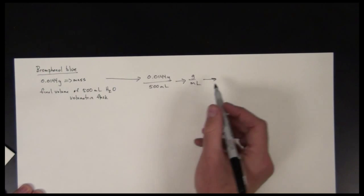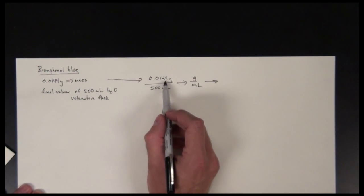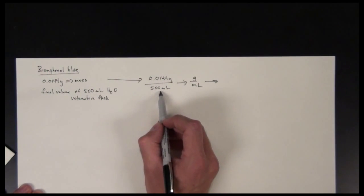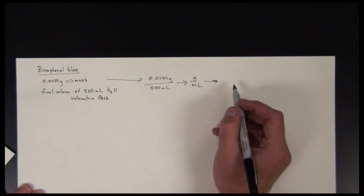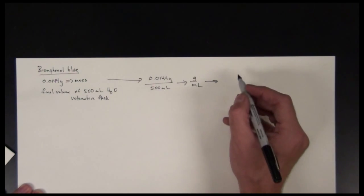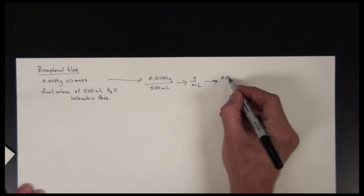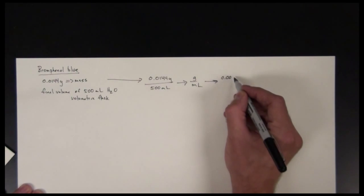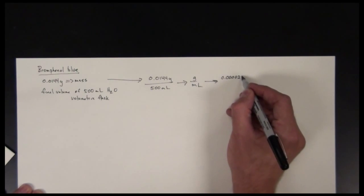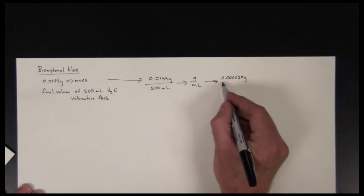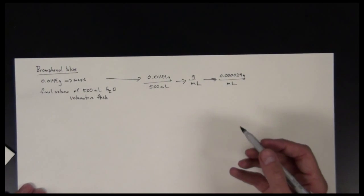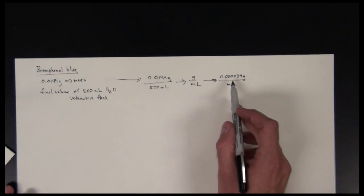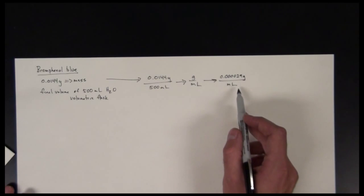In this particular case, we'll take 0.0144 and divide it by 500, and that will give us how many grams we have per milliliter of solvent. So in this case, we would have 0.000029 grams of the bromophenol blue per milliliter of solvent. So that's our concentration, 0.000029 grams per milliliter.